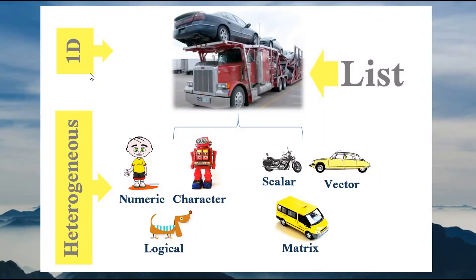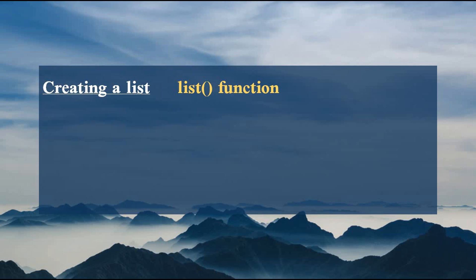As I explained in the last video, a list is a one-dimensional data structure that contains heterogeneous data types. It can contain basic data types such as numeric, character, and logical. It can also contain scalars, vectors, matrices, and lists. If you didn't watch my third and fourth video, please go watch them to get a better idea about one-dimensional data structures and heterogeneous data types.